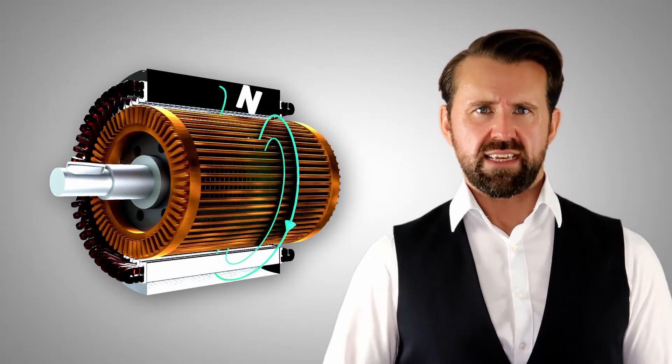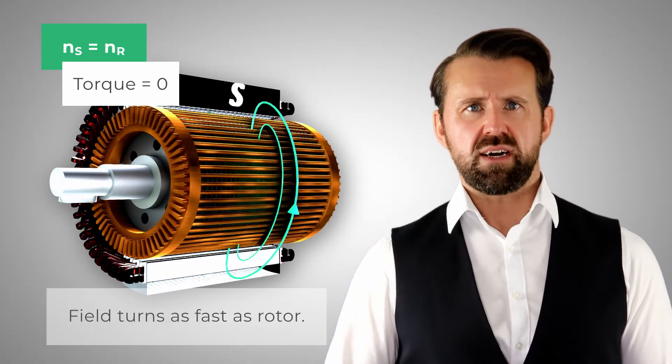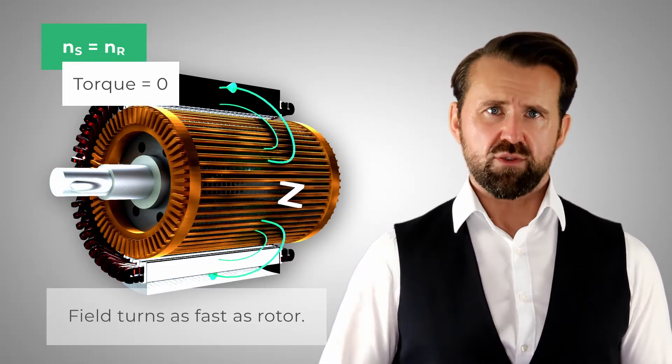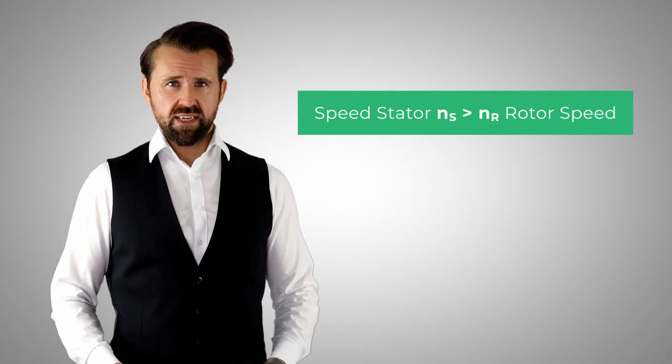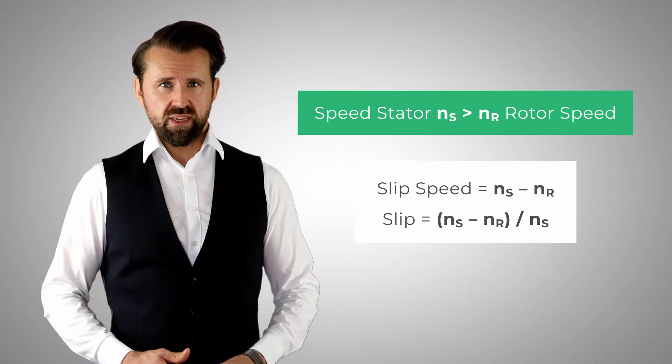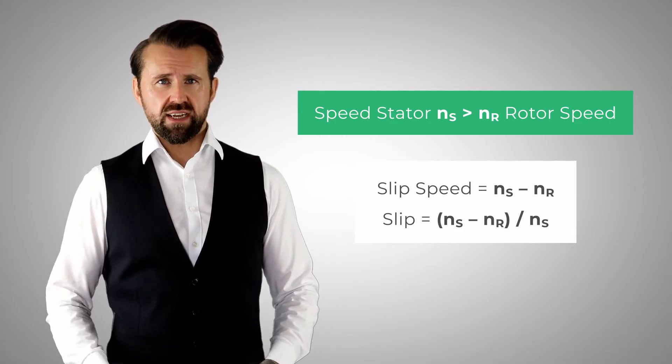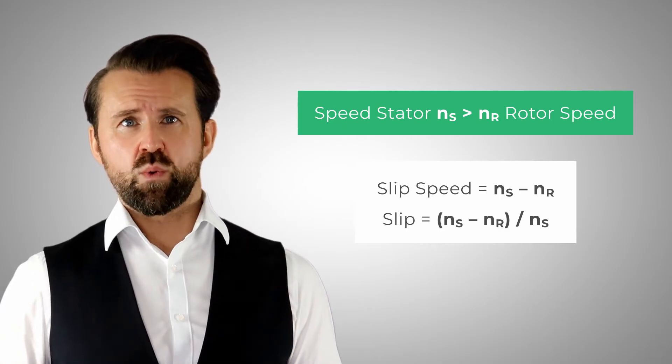When the rotor rotates at the same speed as the stator, no voltage is induced in the bars of the rotor. Therefore, no current flows in the bars that could generate a torque. The rotor must therefore always have a lower speed than the stator, so that the induction motor generates a torque. The difference between the stator and the rotor speed is called slip speed. As we have seen, we can generate a torque from standstill without an inverter or a power electronic.